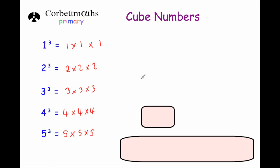So if we were looking for any number cubed we would just write the number down 3 times and times them together. So 1 times 1 times 1.